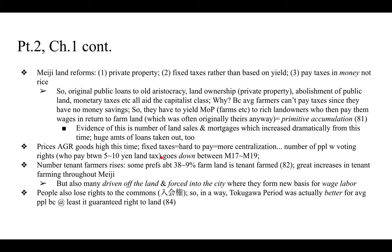In other words people lost access to land they had previously held, showing increased centralization and how hard it was to pay taxes. The number of tenant farmers rose — in some prefectures 38 to 39 percent of farmland was all tenant farmed, and this greatly increased throughout the Meiji period. In addition to tenant farming, many people were simply driven off the land and forced into the city when they couldn't pay taxes or lords kicked them off once it became private property. These people now formed the new basis for the industrial proletariat and wage labor.